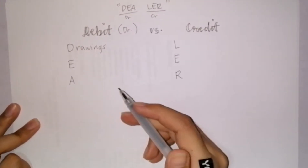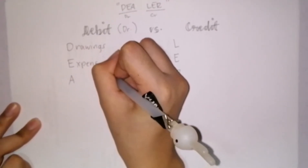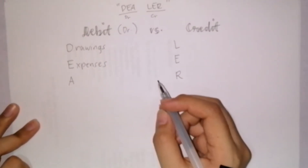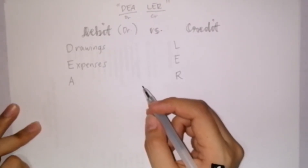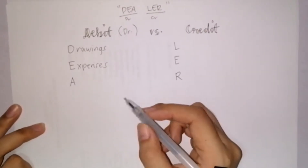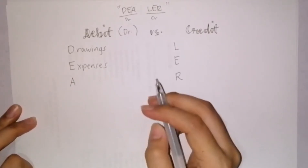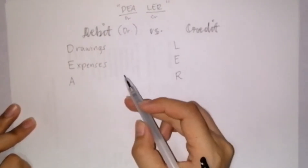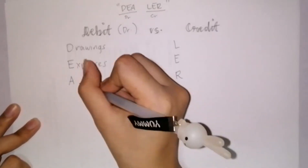Next, under the debit are expenses. Expenses are defined as decrease in assets or increase in liabilities that result in a decrease in equity, other than those relating to distributions to holders of equity claims. Simply, expenses are expenditures of the business. For example, if you have a salon and you're paying for your utilities, you debit utilities expense. And also, if you're renting your space, you also record a rent expense.